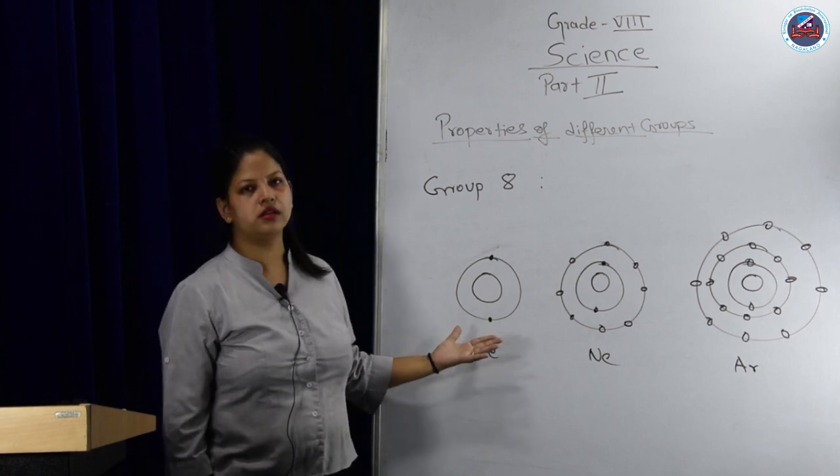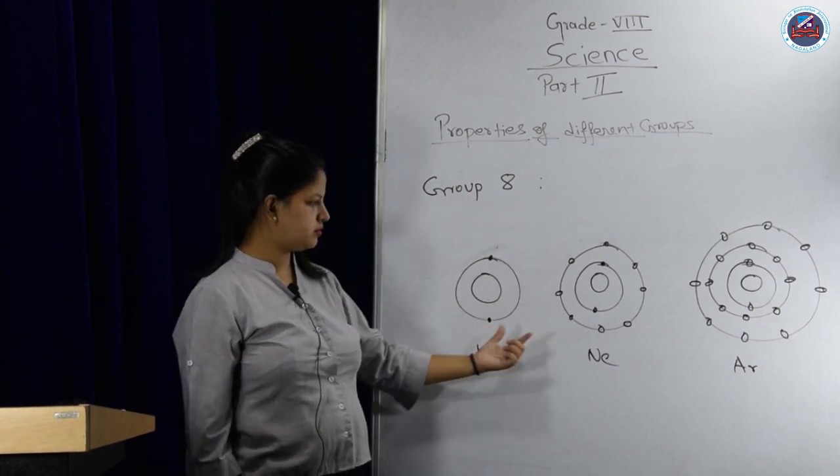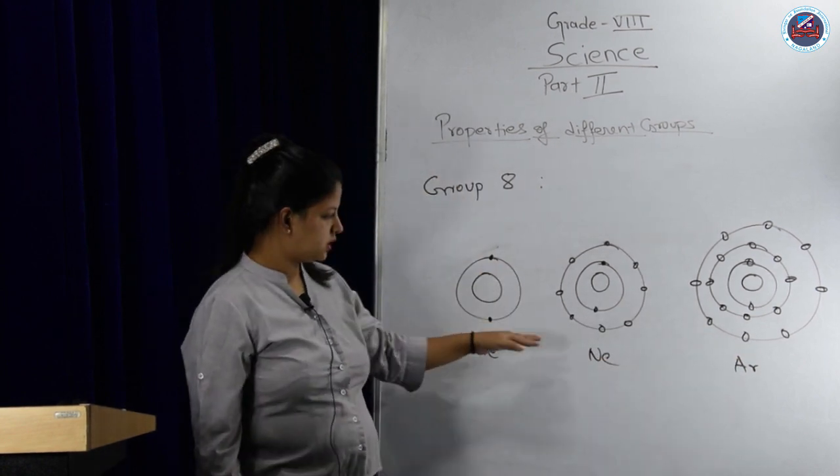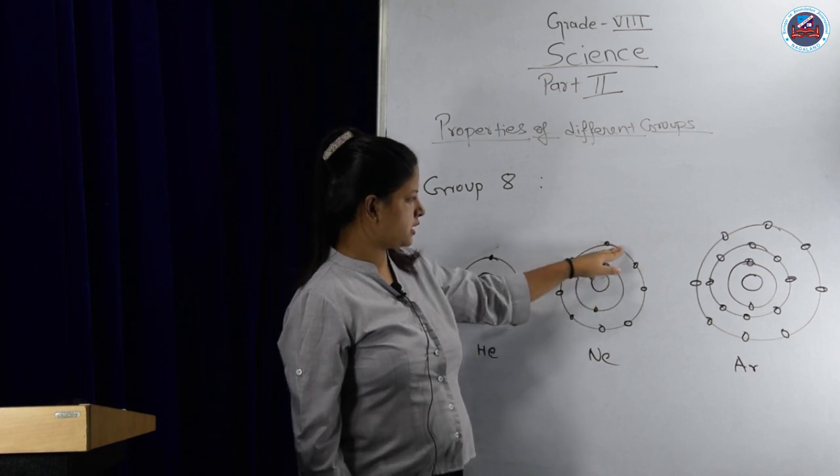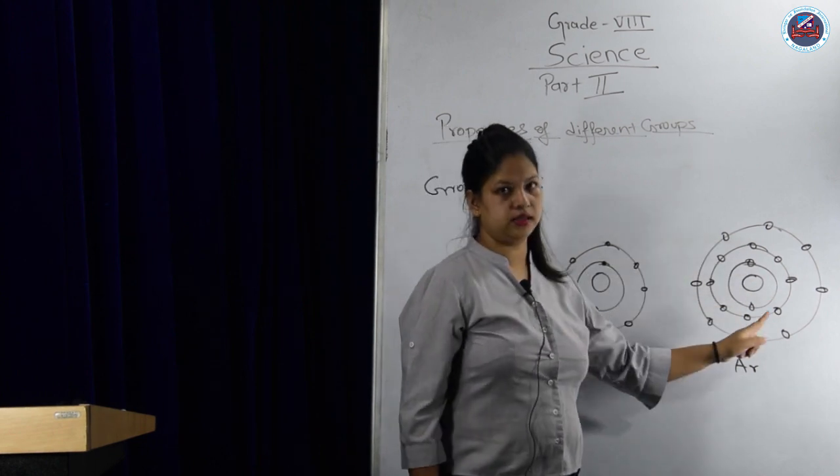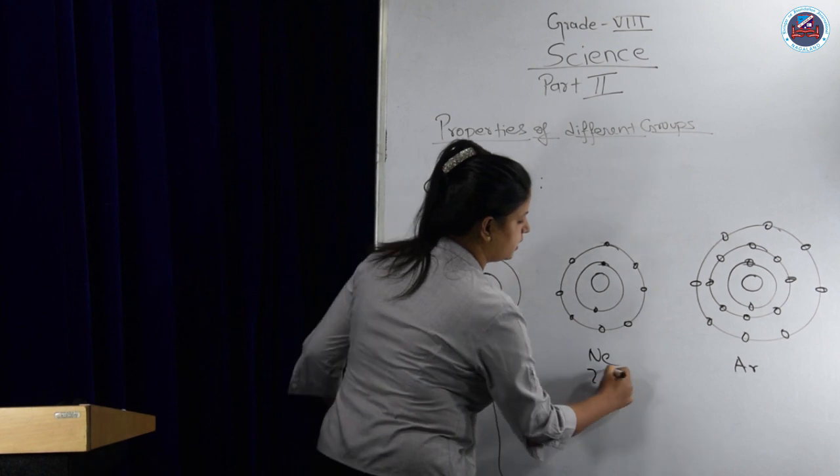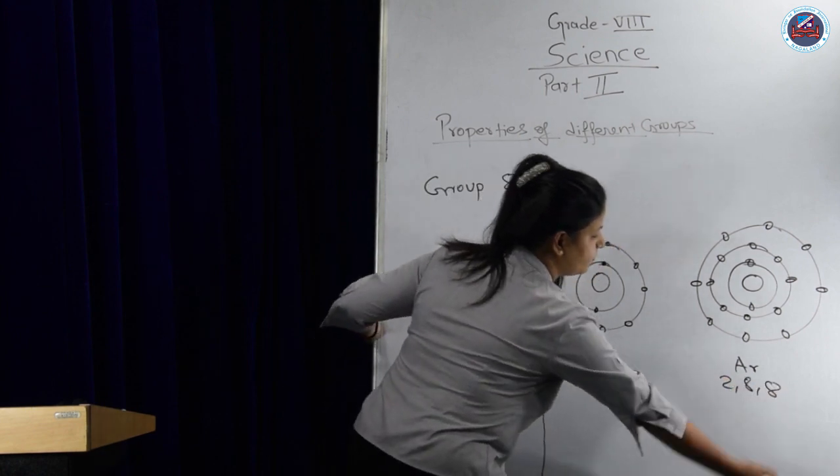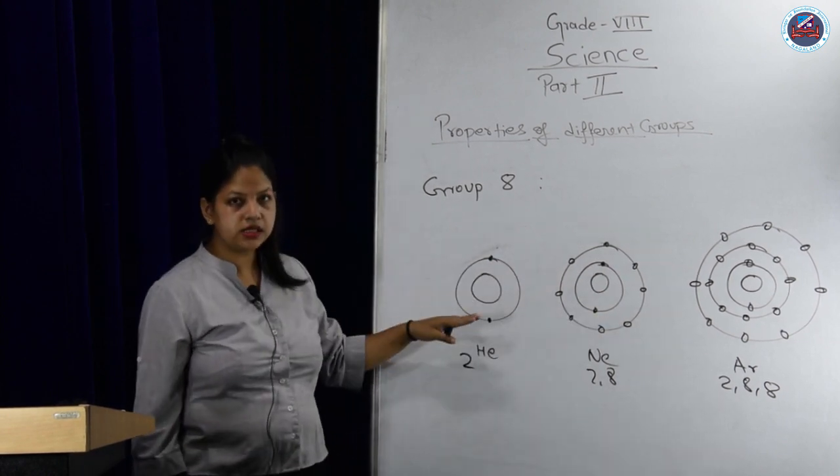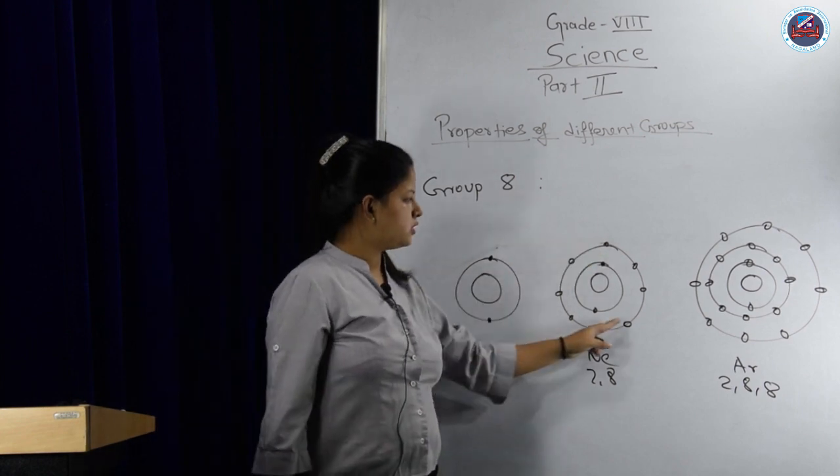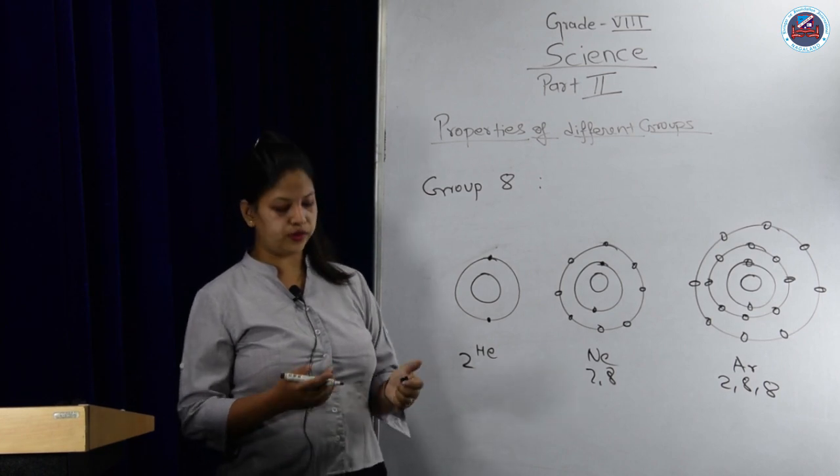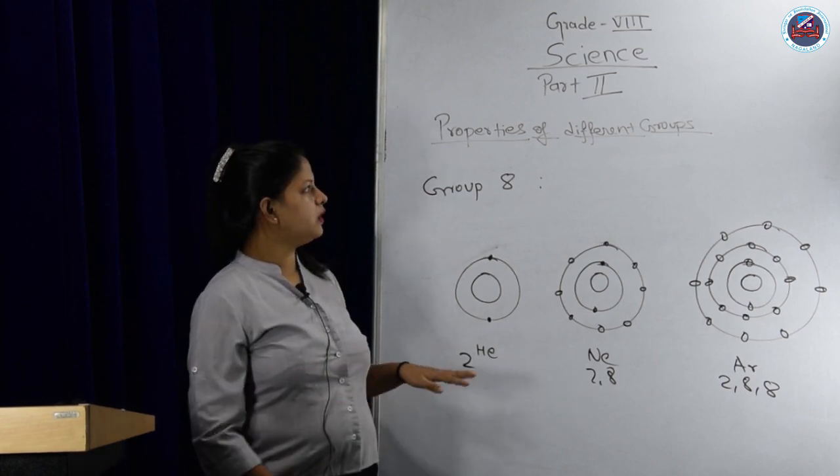Like before, if we compare the atomic structure of group 8 elements: this is helium, neon, and argon. Helium has 2 electrons, neon has 2, 8, and argon has 2, 8, 8, following the KLMN rule. The structures of group 8 elements are very satisfied - last electron contains 2, 8, 8, satisfying the octet rule. That's why we call them inert gases or noble gases.